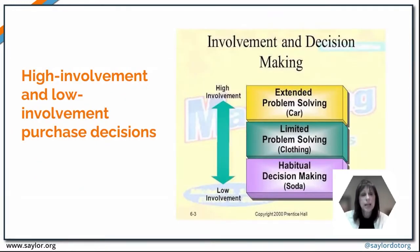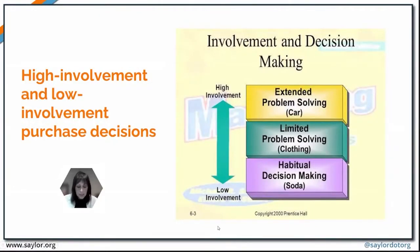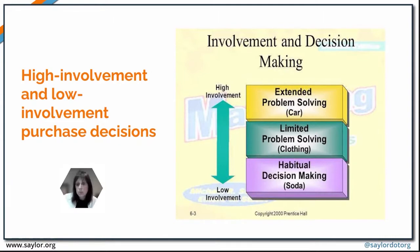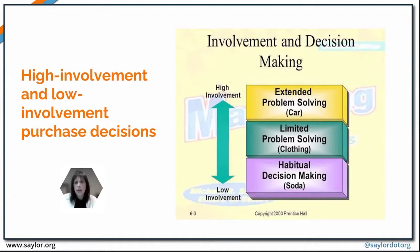Low-involvement decision-making involves more habitual purchase decisions — things like impulse purchases that we make without giving too much thought. Generally those purchases have low risk associated with them as well as a lower price. When it comes to a high-involvement purchase decision, we tend to spend more time gathering information, the risk of making a poor choice is generally higher, and generally the price of what we're buying is higher as well.